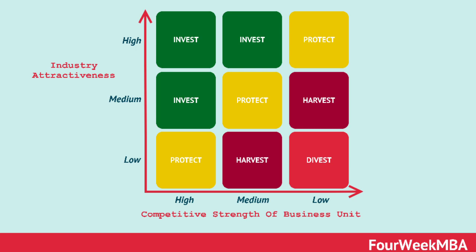Looking at the first lane on the X-axis: the one in yellow has low market attractiveness but high competitive strength, meaning it can easily gain market attractiveness later — so you protect it. The one in red has low market attractiveness and medium competitive strength — you harvest what you already invested. The one in light red has low market attractiveness and low competitive strength, so it has no future — you divest and get your money out of it.